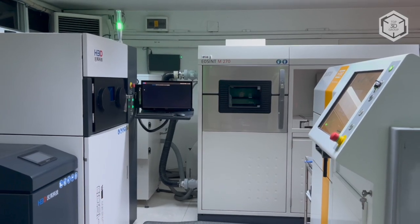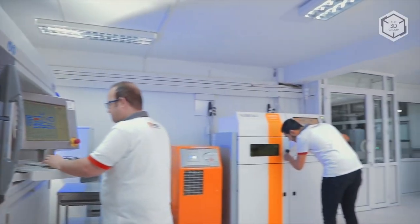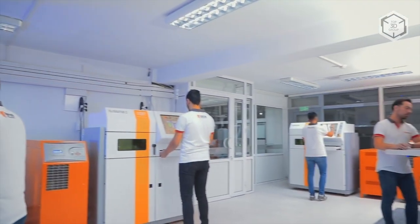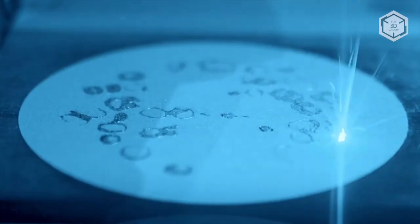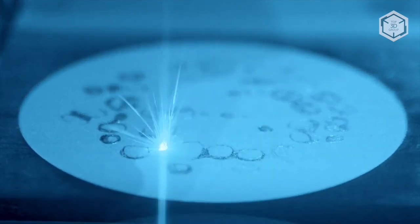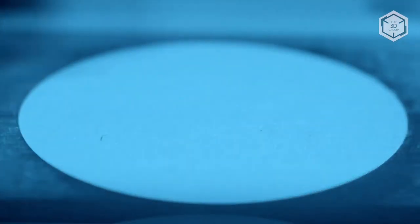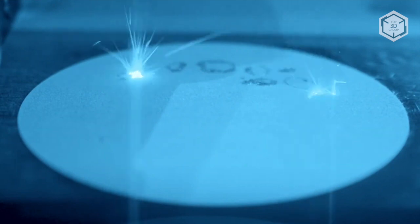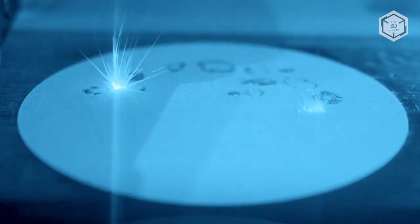The excellent results prompted the management to expand their fleet of additive equipment. In search for reasonably priced metal 3D printers, the company opted for the Sisma brand, as at the time of the decision, EOS did not manufacture machines with the required build volume. In addition, Sisma offered SLM devices equipped with two lasers, which significantly sped up the process of printing dental structures.